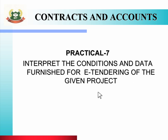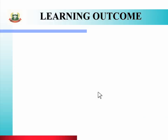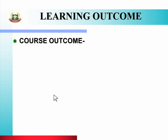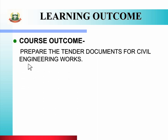To study this practical, we will go through the learning outcome, which includes course outcome, program outcome, and unit outcome. Let us see the course outcome: prepare the tender documents for civil engineering works.